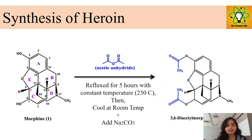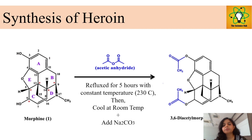The synthesis of heroin: morphine undergoes acetylation with the help of acetic anhydride, refluxed for 5 hours at a temperature of 230 degrees Celsius, with the addition of Na₂CO₃, which leads to the formation of heroin. This process is known as the diacetylization of morphine, converting it into heroin.